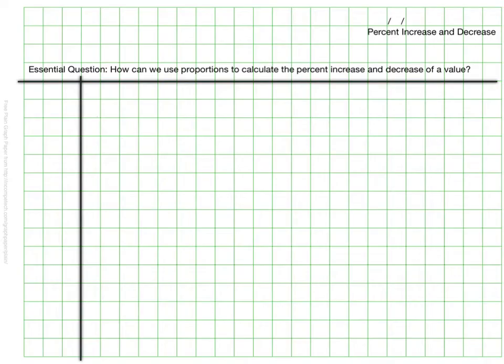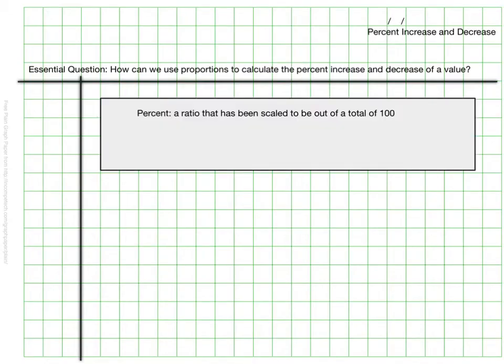Last year we did a lot of work with percentages, so we know that percentages are just a ratio, and that ratio is one that has been scaled either up or down to be out of a total of 100. In fact, we often used this proportional setup so it was part over whole was equivalent to whatever the percent is out of 100.